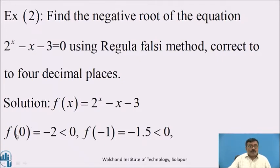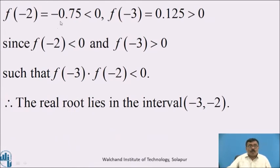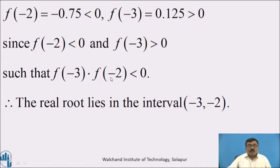That is, f(0) = −2, which is less than 0, and f(−1) = −1.5, which is also less than 0, and f(−2) = −0.75, which is less than 0, and f(−3) = 0.5, which is greater than 0. Since f(−2) < 0 and f(−3) > 0, such that f(−3) × f(−2) < 0. Therefore, the root lies in the interval [−3, −2].